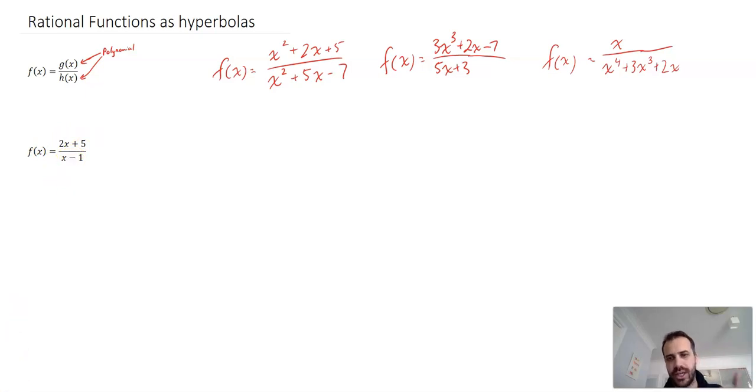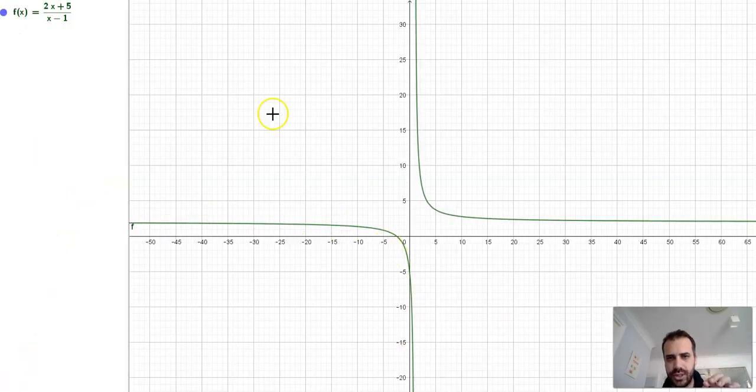Now more generally, I could write that as ax plus b over cx plus d. This particular one that I've chosen becomes a hyperbola when we sketch it. I'll show you what it looks like. You can see that this is what it looks like. It looks like it's got an asymptote through maybe the number 2 here and an asymptote through maybe the number 1 there, but we'll have to do a bit more investigation for that. But this is a hyperbola.